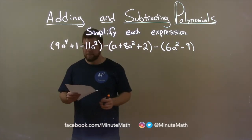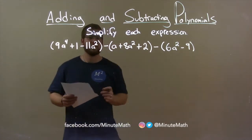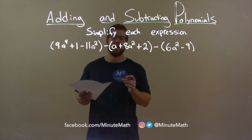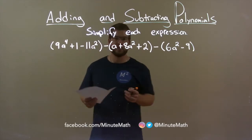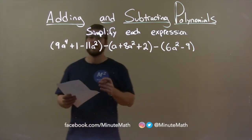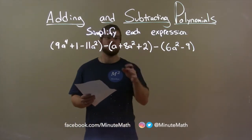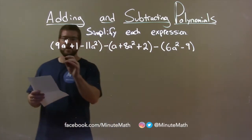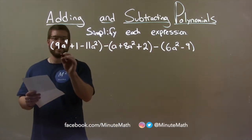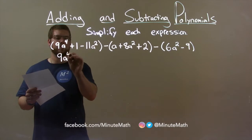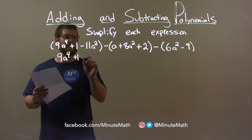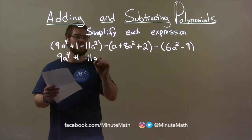Alright? Within each parenthesis, I do not see anything that I can combine — no like terms. So now I want to distribute my minus signs to their corresponding parenthesis. The first one doesn't have any, so we just write that down: 9a to the 4th, plus 1, minus 11a squared.